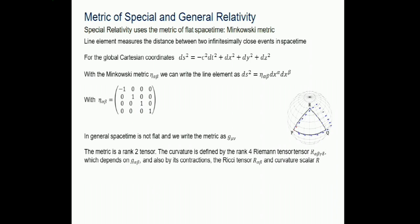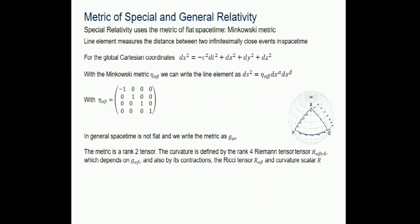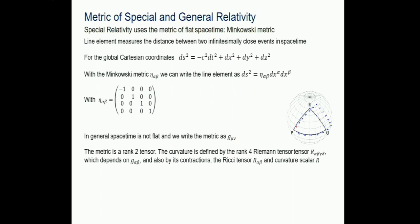In general spacetimes, the metric is not flat and can change from point to point, defined by the tensor g_μν. The central object is the Riemann tensor, which locally at a point defines whether spacetime is curved. Curvature is gravity in spacetime, and the Riemann tensor is the central object.